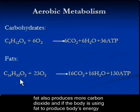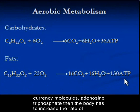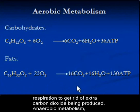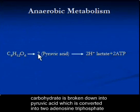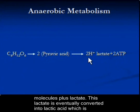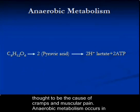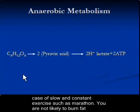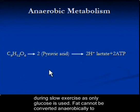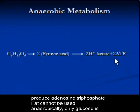If the body is using fat to produce adenosine triphosphate, it must increase the rate of respiration to eliminate the extra carbon dioxide being produced. In anaerobic metabolism, carbohydrate is broken down into pyruvic acid, which is converted into two adenosine triphosphate molecules plus lactate. This lactate is eventually converted into lactic acid, which is thought to be the cause of cramps and muscular pain. Anaerobic metabolism occurs during slow and constant exercise such as a marathon. During such exercise, only glucose is used — fat cannot be used anaerobically to produce adenosine triphosphate.